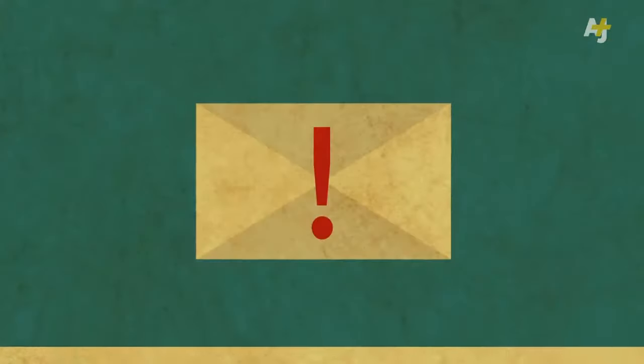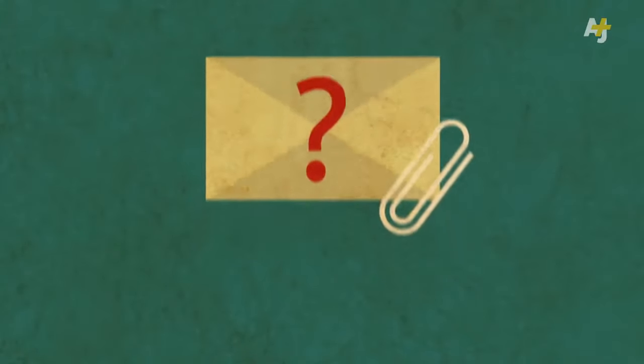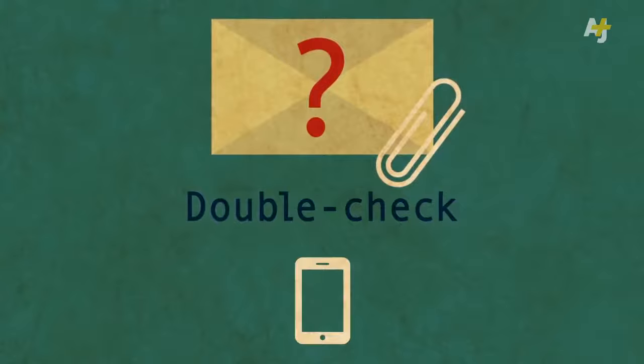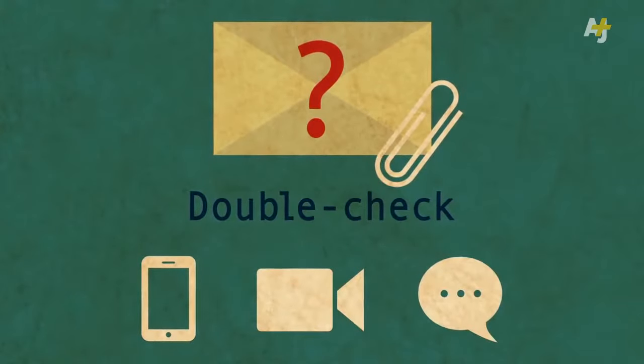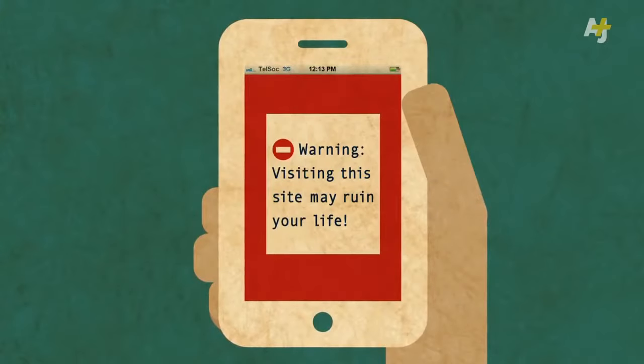So, be very careful opening strange email attachments. One way to deal with a suspicious attachment from someone you know is to double-check with them in person, by phone, video chat, or instant message before you open it. You should also be cautious of clicking on suspicious web links.